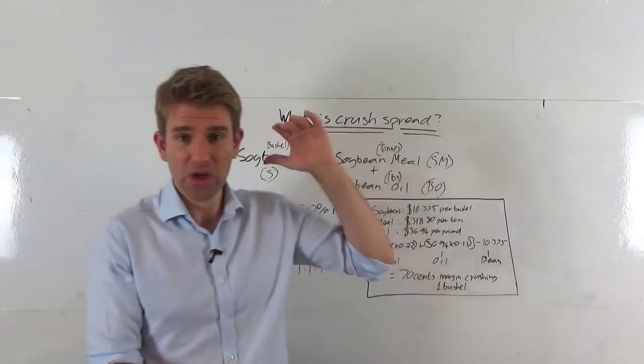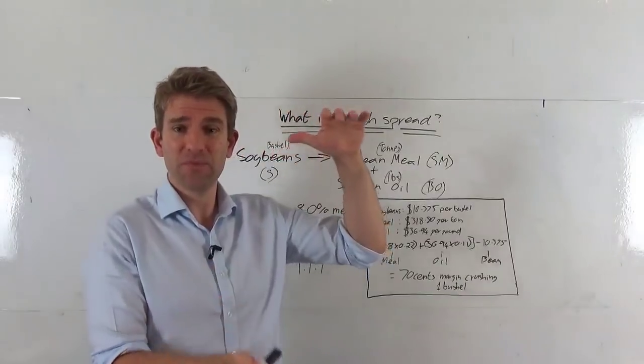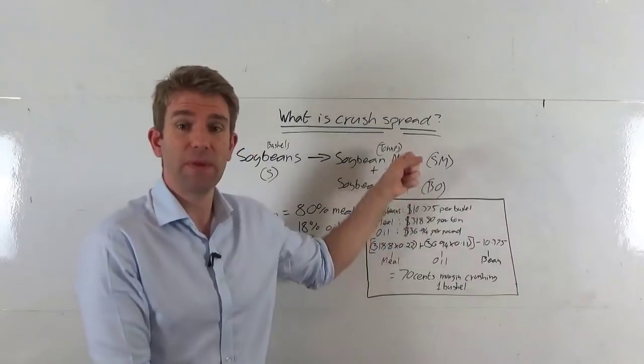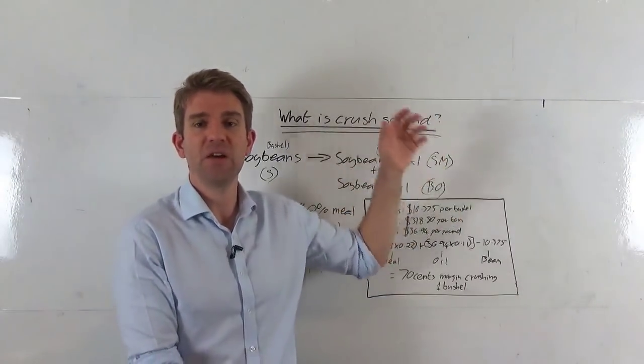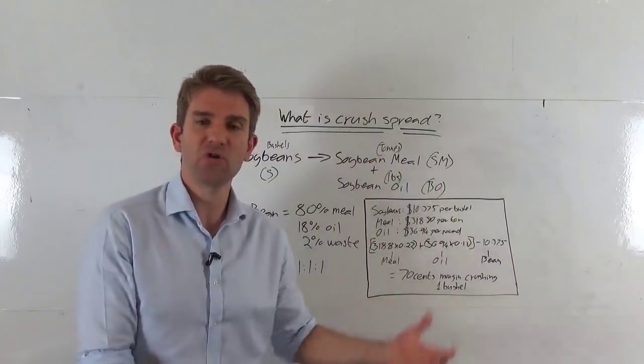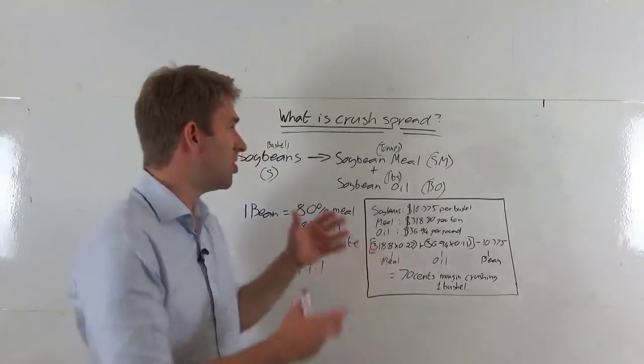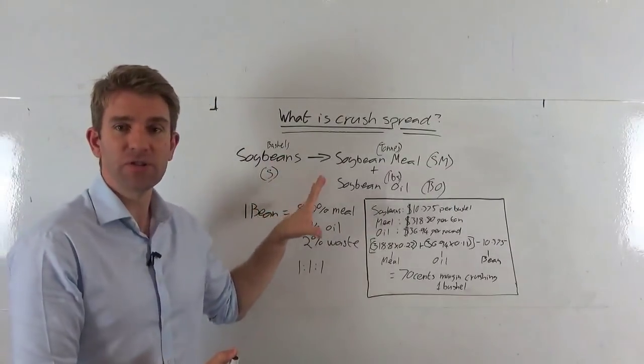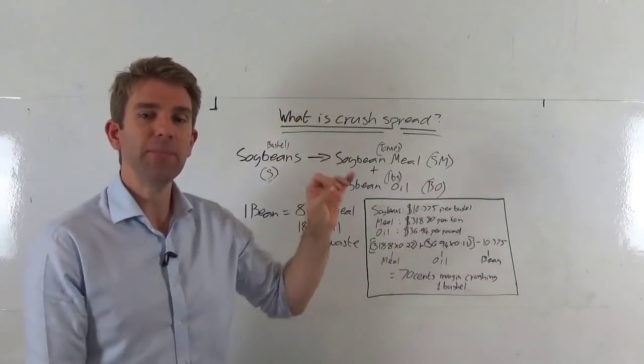Ultimately, soybeans are farmed, they're crushed, and then they're converted into soybean meal and soybean oil. Soybean meal is generally used for feed for livestock, etc. Soybean oil is used in things like margarine, salad dressings, that kind of stuff. So two distinct products we get out of the soybeans themselves.